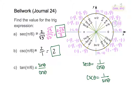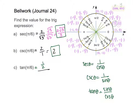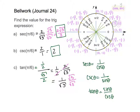So tangent is sine over cosine. My sine value for pi over 6 was 1 half, so I'm going to put 1 half on the top. The bottom is going to be cosine of pi over 6, which is square root of 3 over 2. Working this out, I have 1 half and I need to flip the bottom fraction, so that's 2 over square root of 3. The 2s cancel diagonally, leaving 1 over square root of 3. Then I rationalize, making the bottom 3, and the top is square root of 3. So I no longer have the root in the bottom, and that's my value for tangent pi over 6.